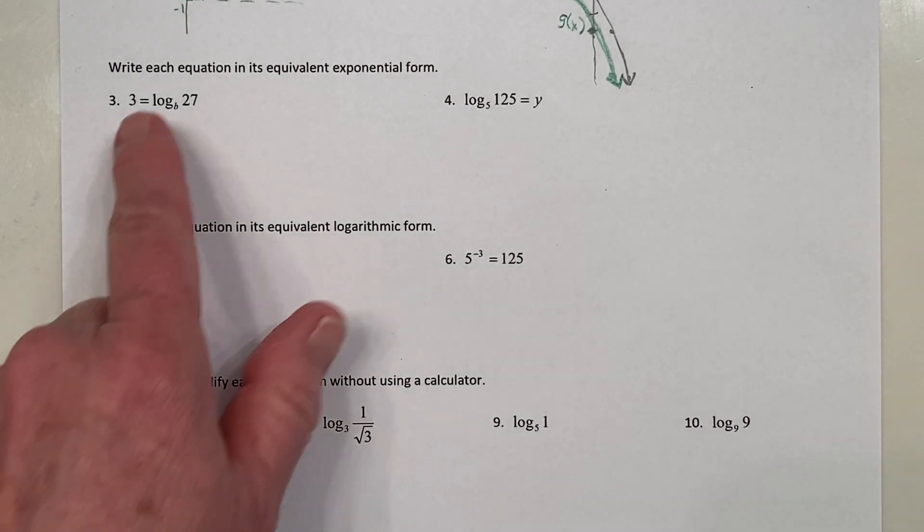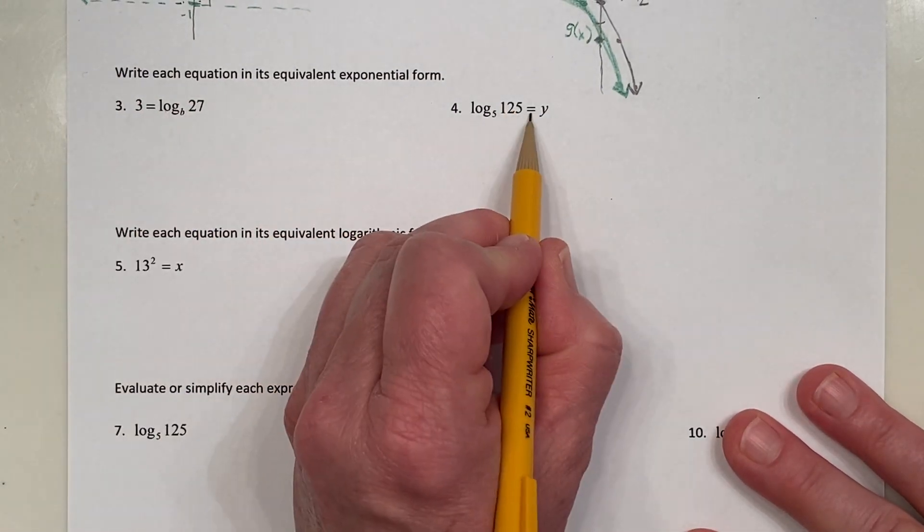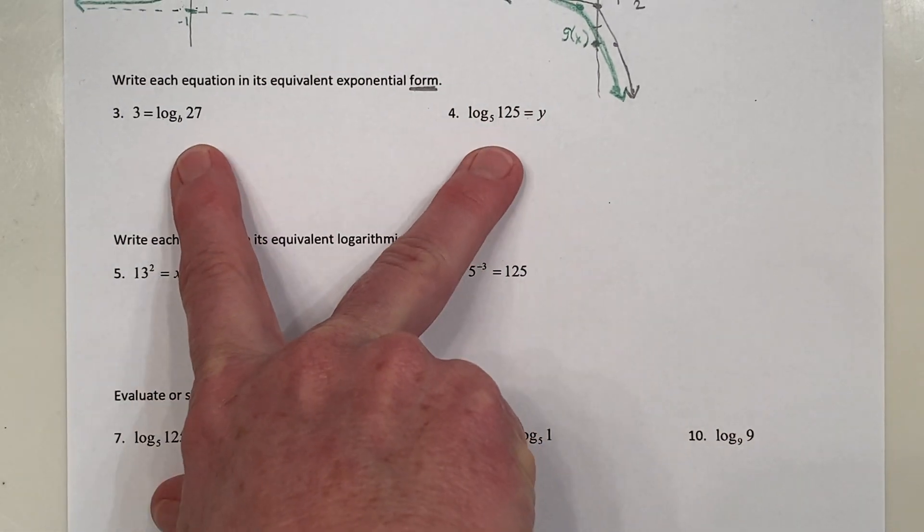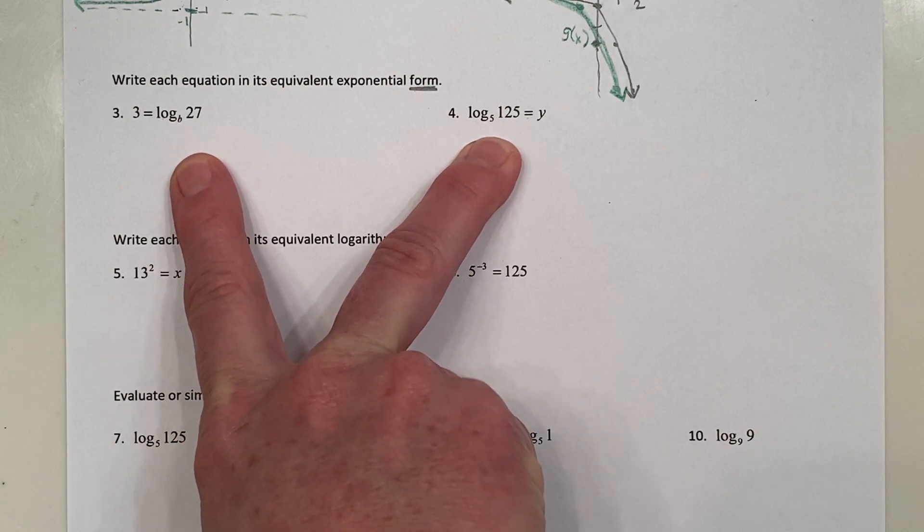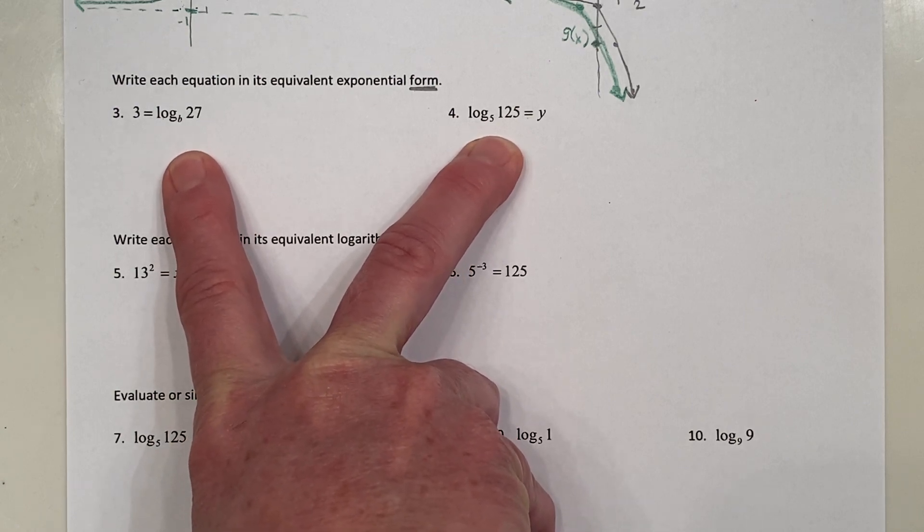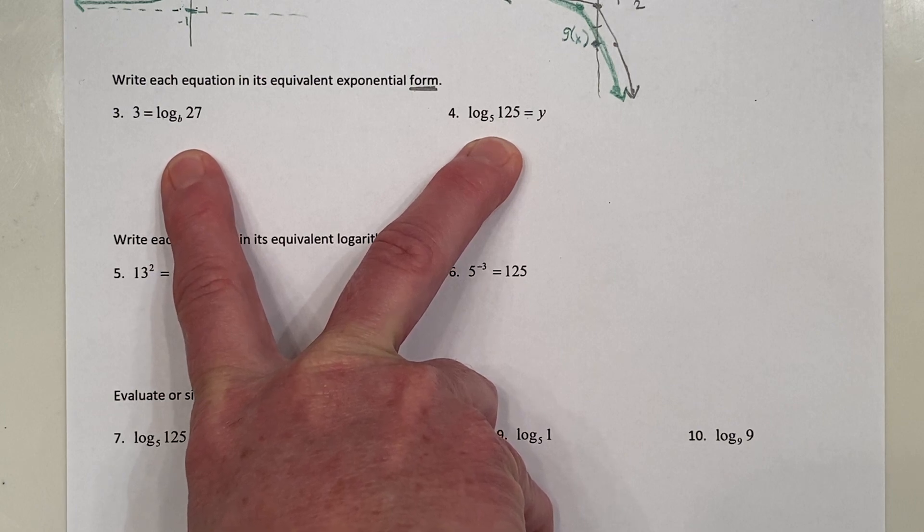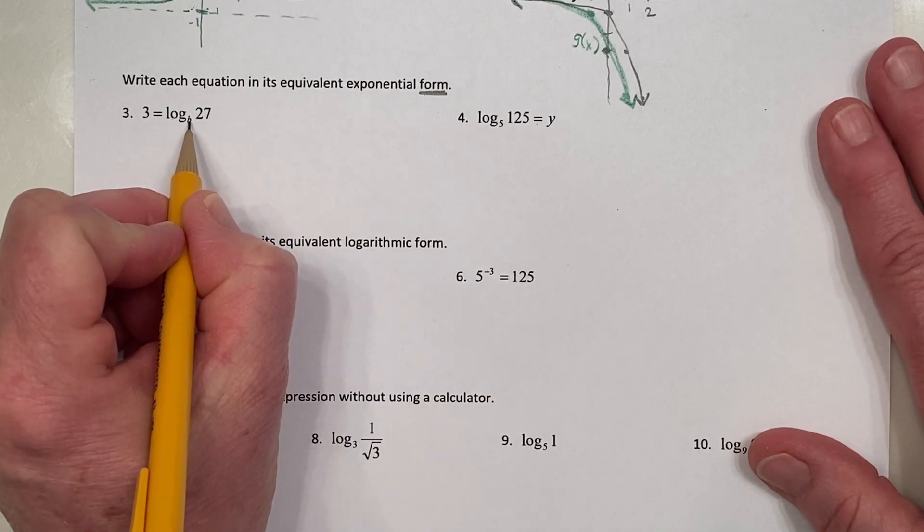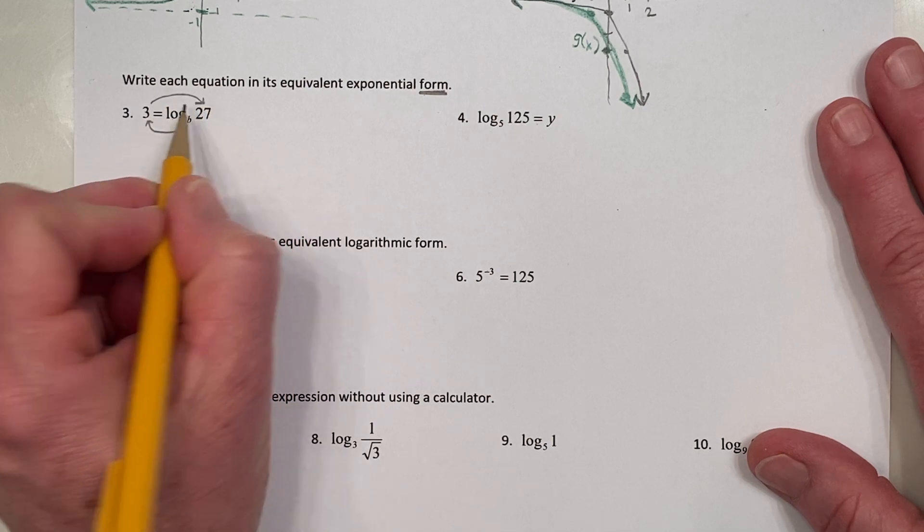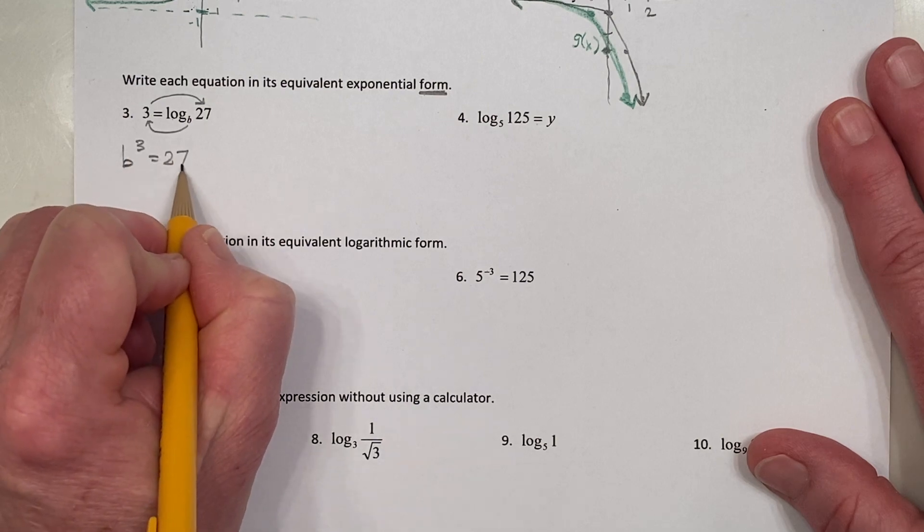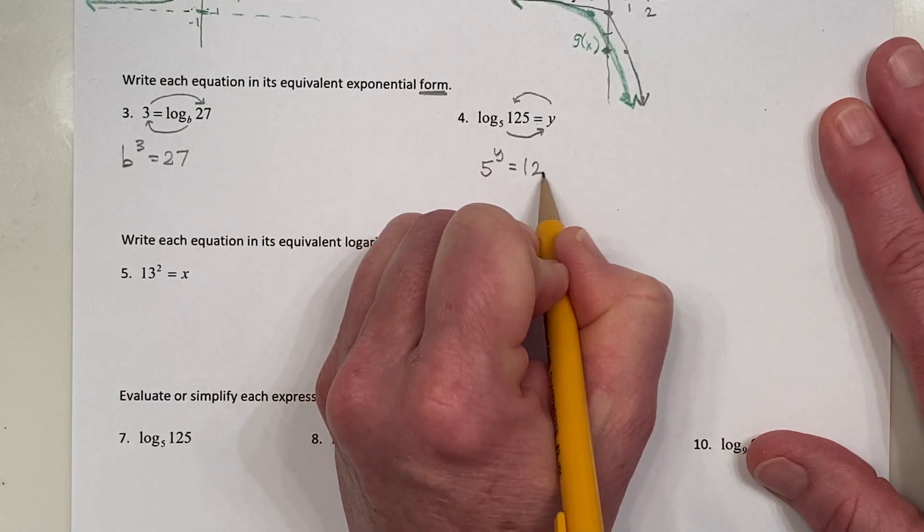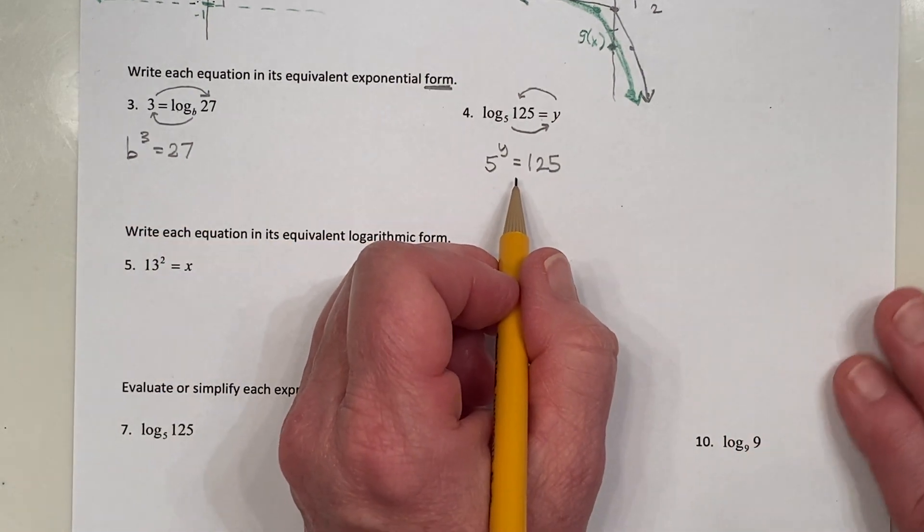Alright. Looking at the next objective for problems 3 and 4, we're supposed to write each equation. Yes, these are both equations because I see an equal sign in its equivalent exponential form. So these are currently log equations because we see the presence of the log. But we want to remove the logs and change these to the equivalent exponential form. Much like one half is the fraction, but 0.5 is the decimal. Those are two different forms, but they name the same value. You might remember this is around the world. So start with the base on the log. This becomes your exponent. And this is your value. So b cubed equals 27. So both our answers are exponential in form. They don't have logs in them.